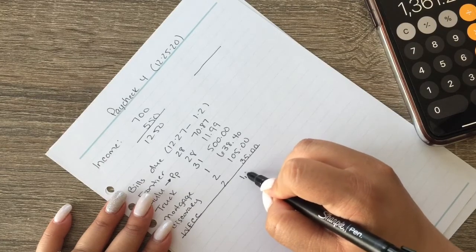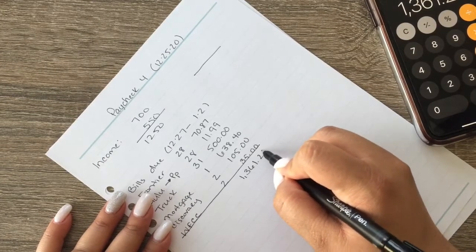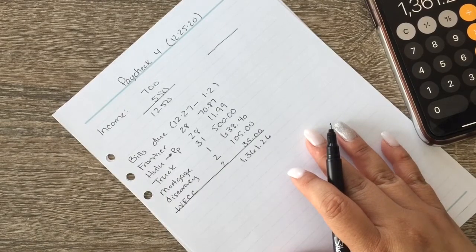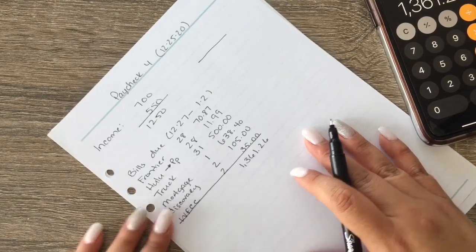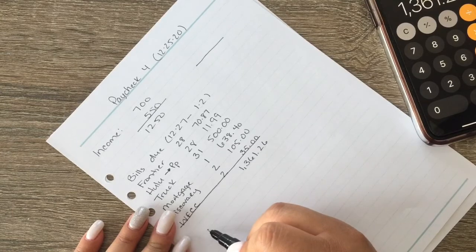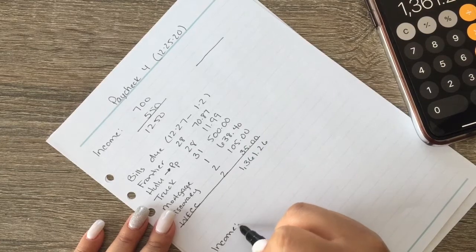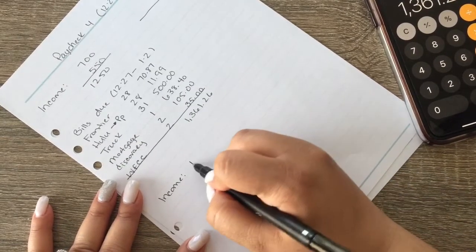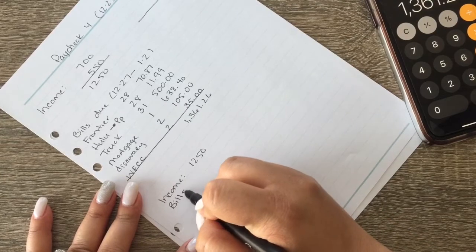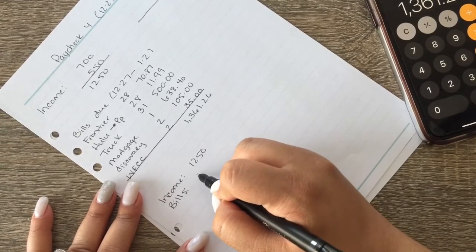Okay, so we are going to now go down here and do our actual, see what we got left over. So our income is $1250, our bills come out to be $1361.26.